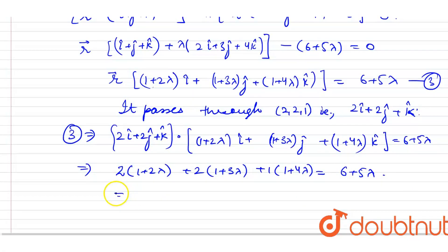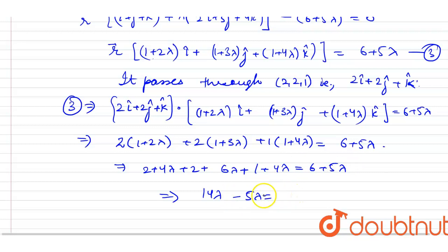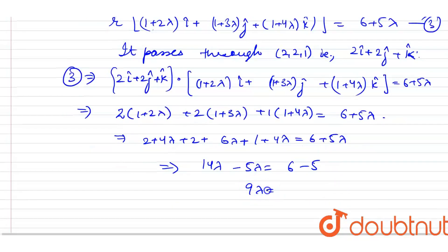Expanding: 2(1 plus 2lambda) plus 2(1 plus 3lambda) plus 1(1 plus 4lambda) equals 6 plus 5lambda. This gives 2 plus 4lambda plus 2 plus 6lambda plus 1 plus 4lambda equals 6 plus 5lambda, so 5 plus 14lambda equals 6 plus 5lambda, giving 9lambda equals 1, which implies lambda equals 1 by 9.